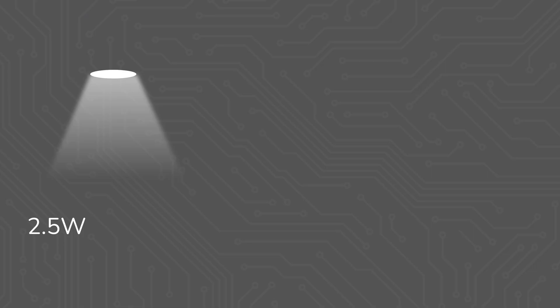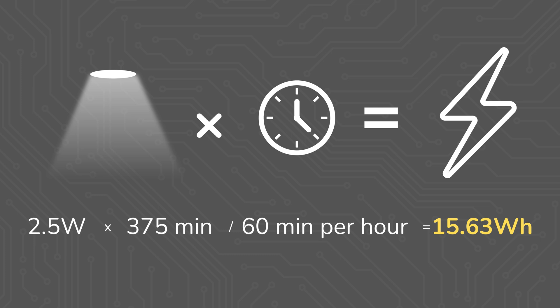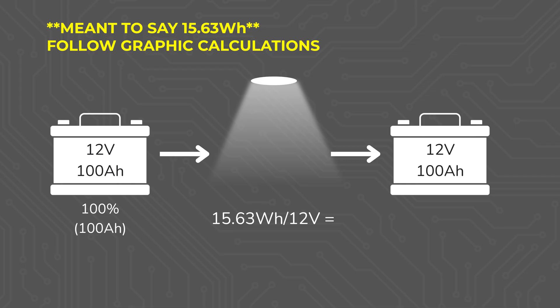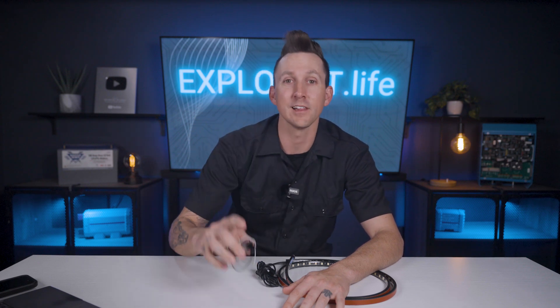Now we have everything we need. 2.5 watts for the lights times 375 minutes divided by 60 minutes per hour gives us 15.63 watt hours. Now in the context of an off-grid battery bank, if this power were being drawn from a 12-volt battery, 15.63 watt hours divided by 12 volts results in 1.30 amp hours — which is 31.25% of a 100 amp hour 12-volt battery for those 6 hours and 15 minutes of powering just this single puck light.